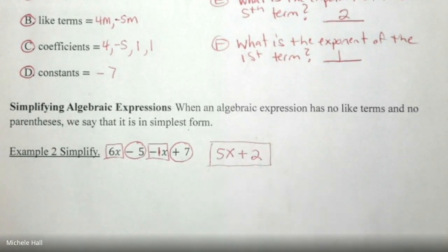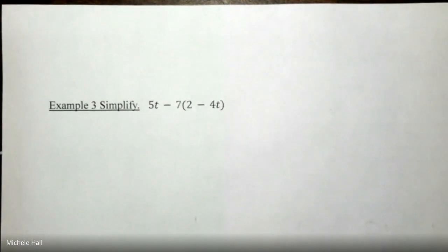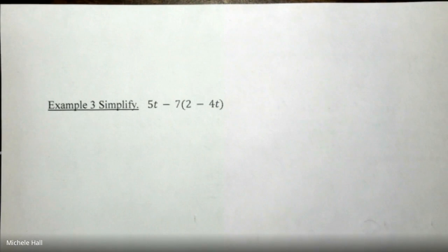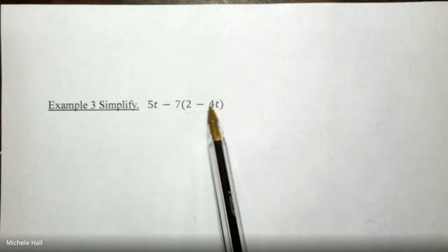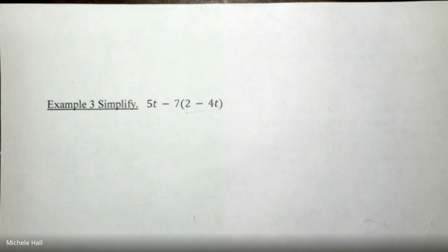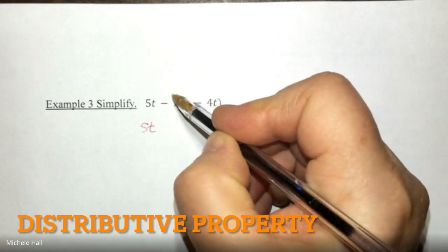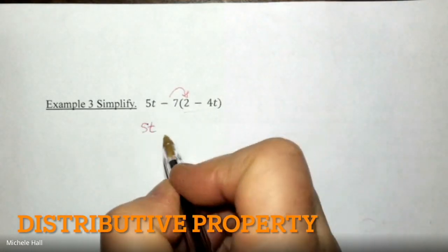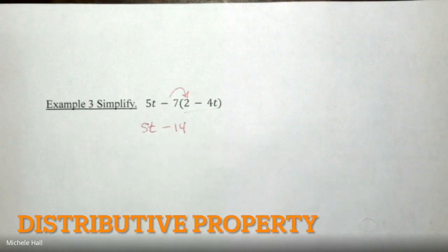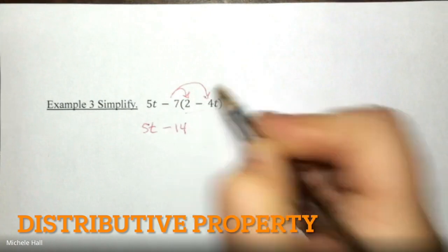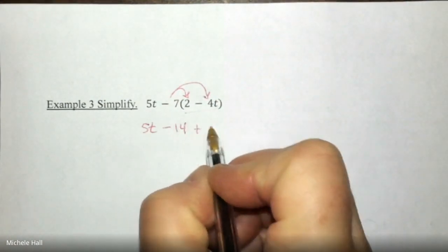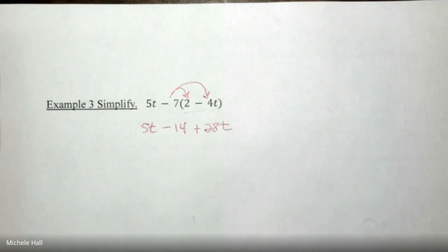We have to simplify this because we have parentheses and I see I have two t terms. We're going to start with getting rid of the parentheses first. So I'm not doing anything with the 5t yet. I'm going to bring it down and I'm going to do the distributive property. Negative 7 times 2 is negative 14. Negative 7 times negative 4 is a positive 28t.